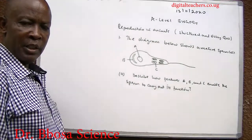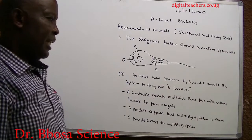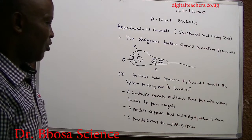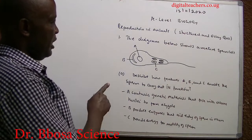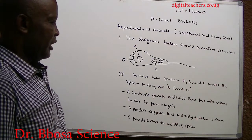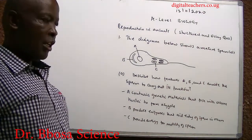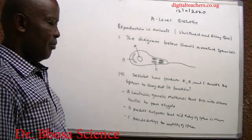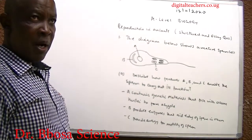You can pause and answer. A: Contains genetic material that fuses with the ovum nucleus to form a zygote. B: Contains enzymes that aid entry of sperm into the ovum. C: Mitochondria provide energy for motility of sperms.